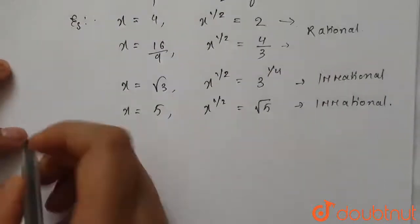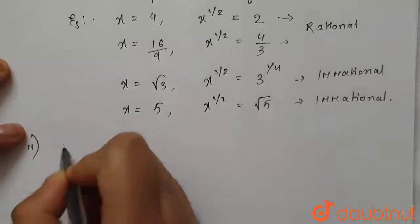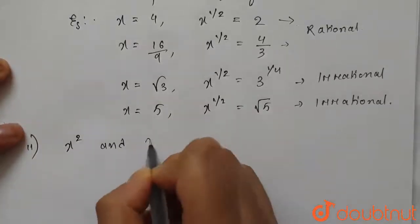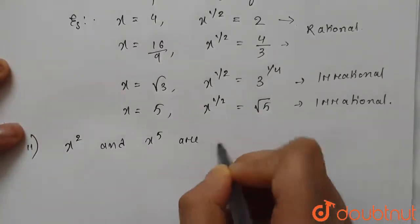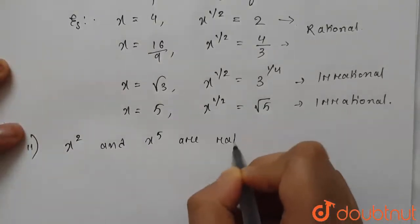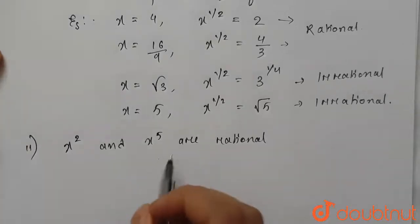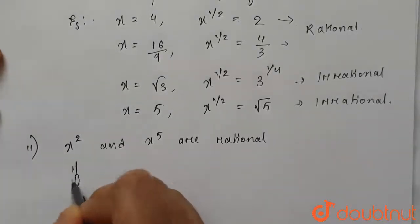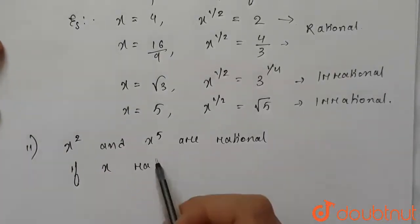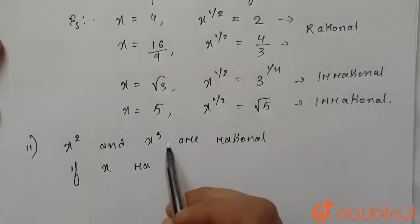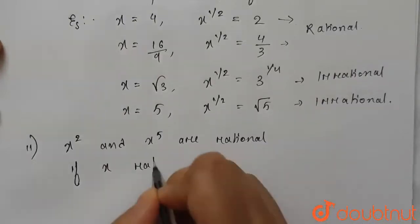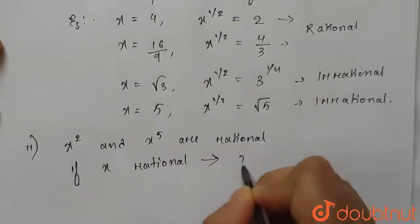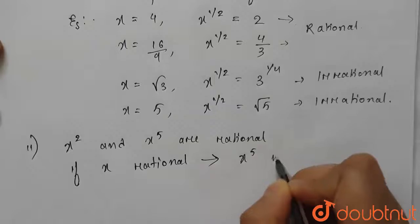Now let's check the second condition: x square and x to the power 5 are rational. If x is rational, only then x to the power 5 will be rational.